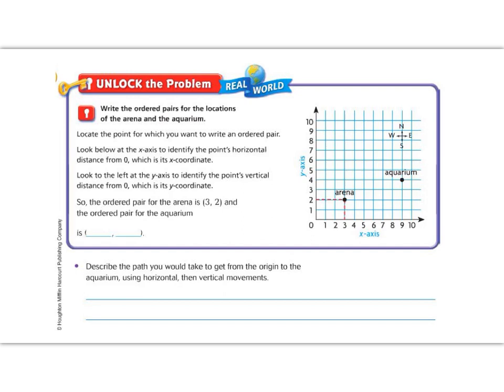All right, 5th graders, today's lesson, Ordered Pair, has a lot of vocabulary. Locating a point on a coordinate grid is similar to describing directions using north, south, east, and west. The horizontal line on the grid is called the x-axis. Remember that horizontal goes this way. So the x-axis is found here along the bottom. The vertical line is called the y-axis. The y-axis goes up and down. So the y-axis is found here.